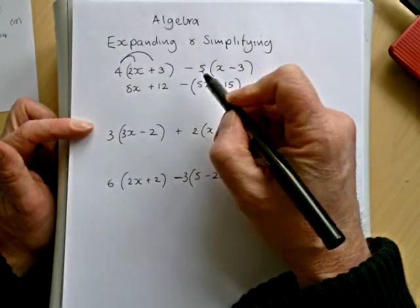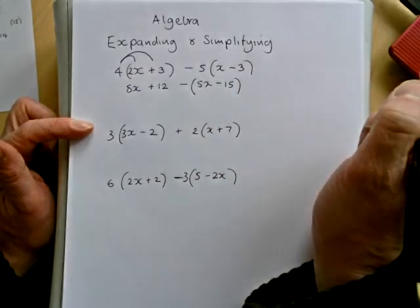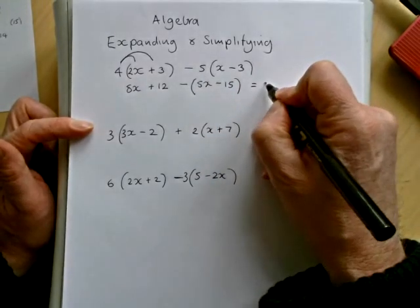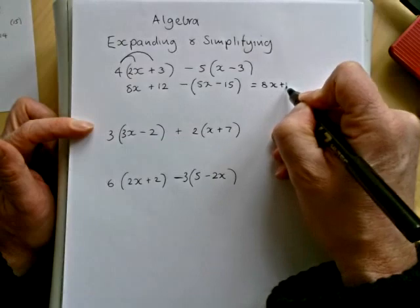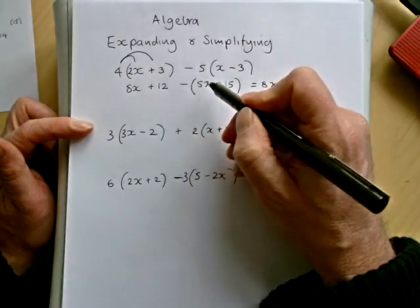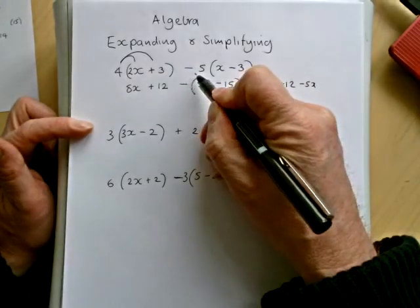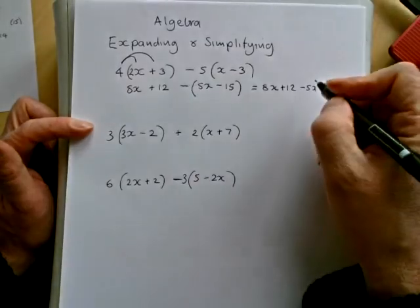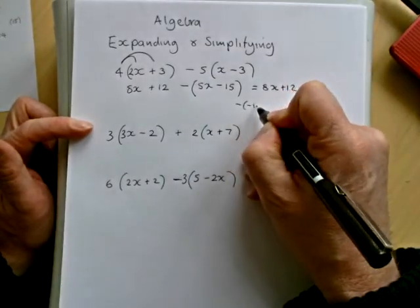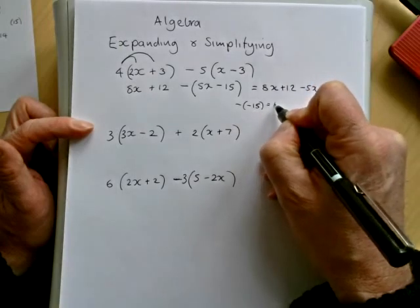I haven't applied this subtraction yet because I haven't removed the brackets. We'll do that here. So you've got your 8x plus 12, you must write that. Then you've got minus 5x, and then you have minus minus 15. Minus minus 15 equals plus 15.